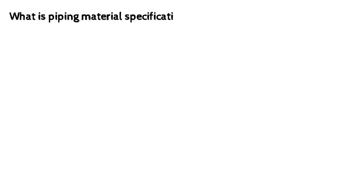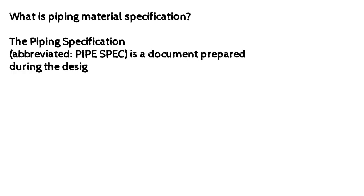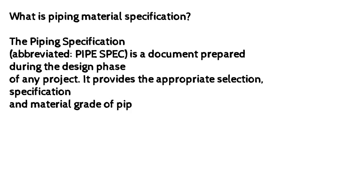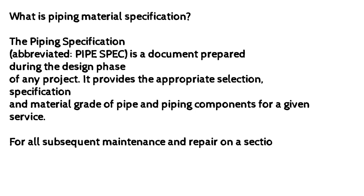What is piping material specification? The piping specification, abbreviated as pipe spec, is a document prepared during the design phase of any project. It provides the appropriate selection, specification, and material grade of pipe and piping components for a given service. For all subsequent maintenance and repair on a section of pipe, the piping specification remains the key to correct material selection.